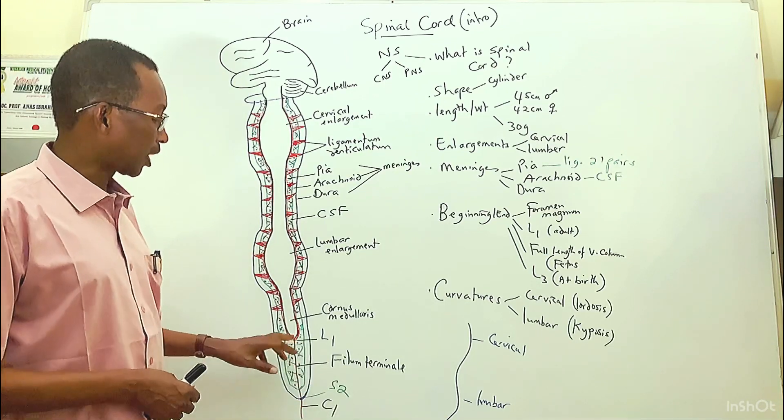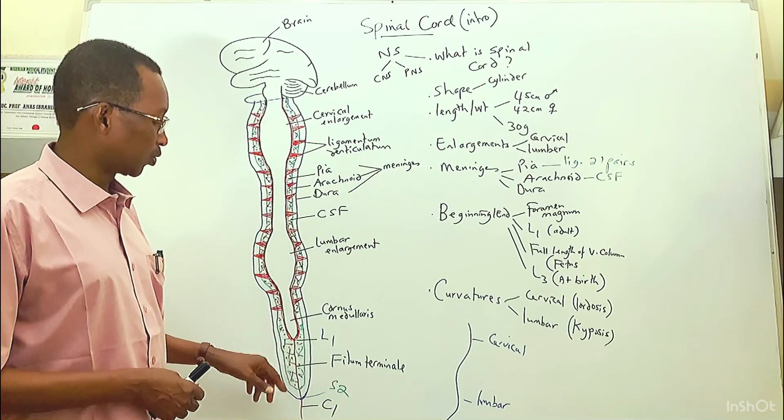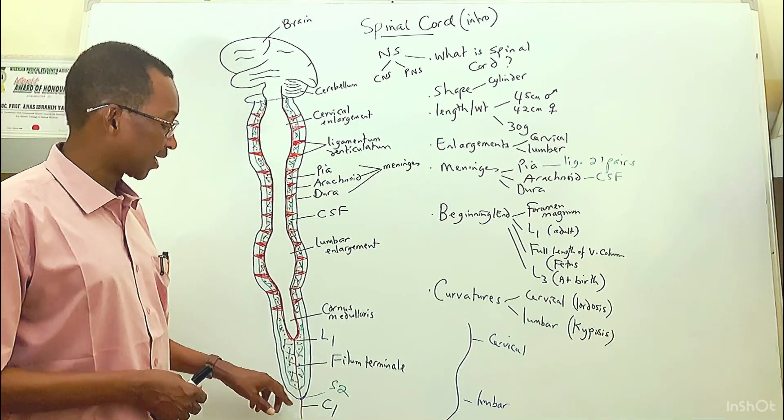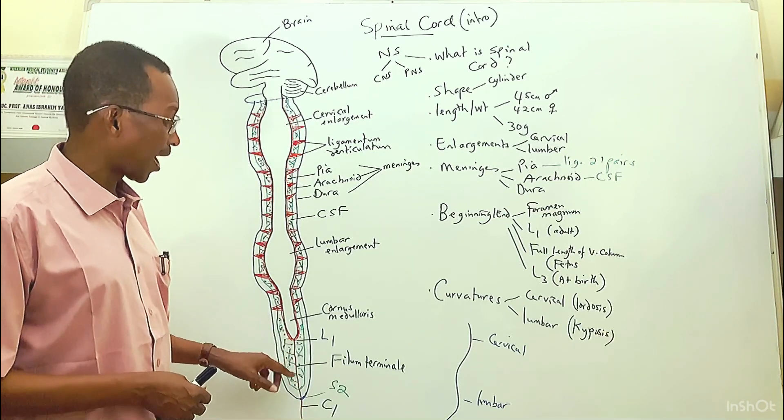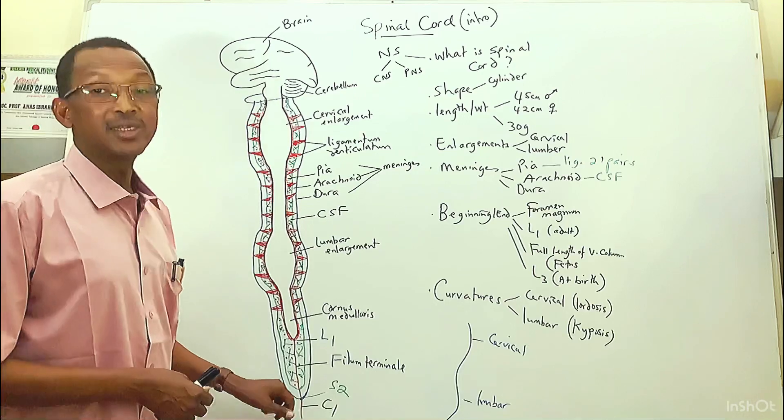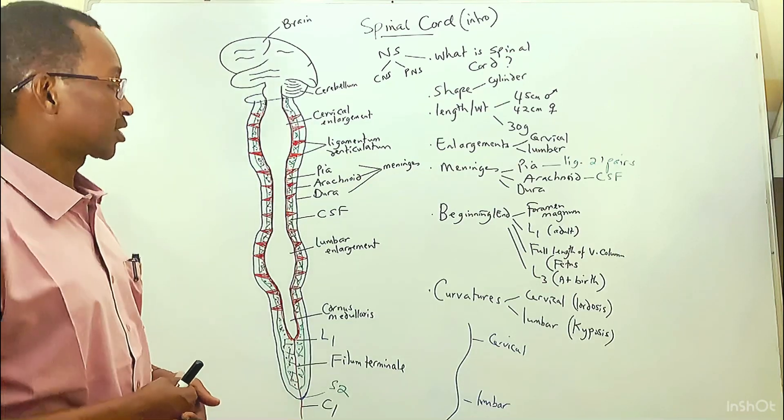As one grows to adulthood, the spinal cord terminates at the level of L1 because the vertebral bones grow faster than the spinal cord. To summarize the terminations: the spinal cord ends at L1; the arachnoid mater and dura mater terminate at S2; and the filum terminale, the filament-like extension of the pia mater, ends at the first coccygeal bone.